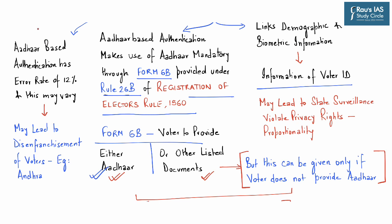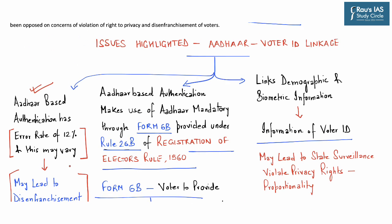Another concern highlighted is that Aadhaar-based authentication has an overall error rate of 12%, which may also increase. This error rate was highlighted especially with respect to the Andhra Pradesh government's Aadhaar-voter ID linkage program, which led to disenfranchisement of approximately 30 lakh voters — a substantial concern regarding the proposed national linkage.